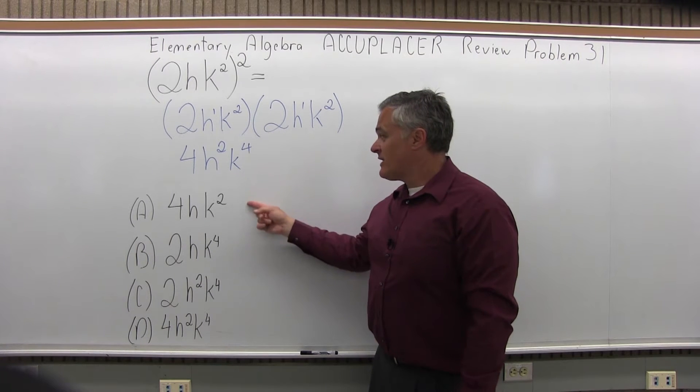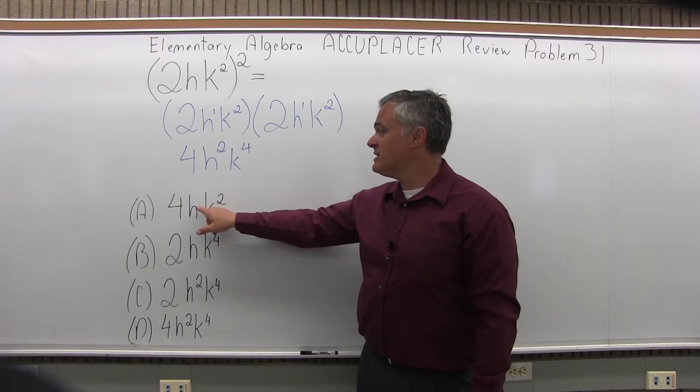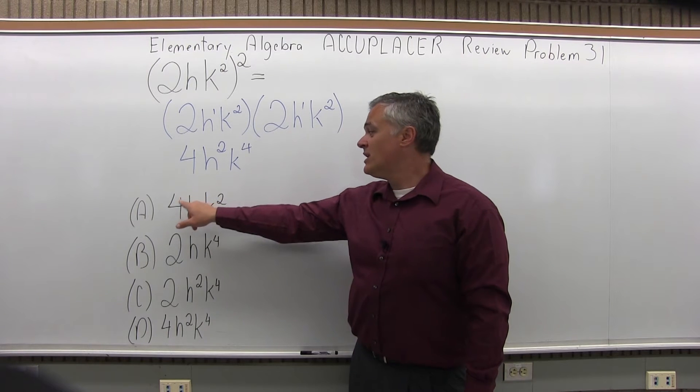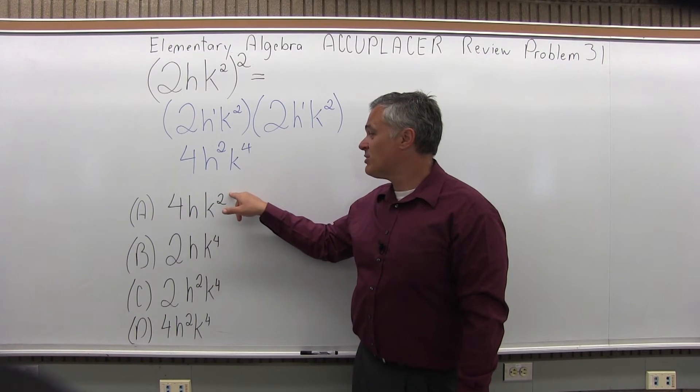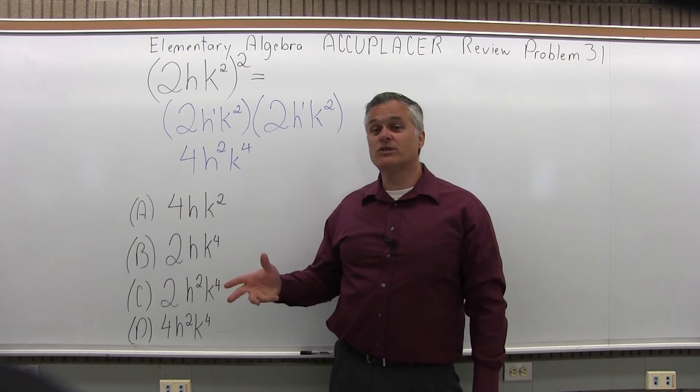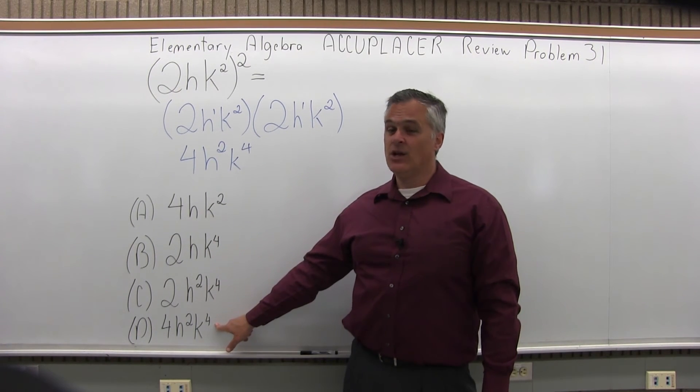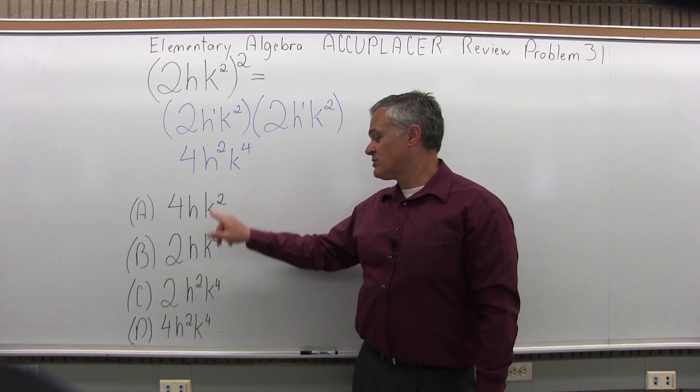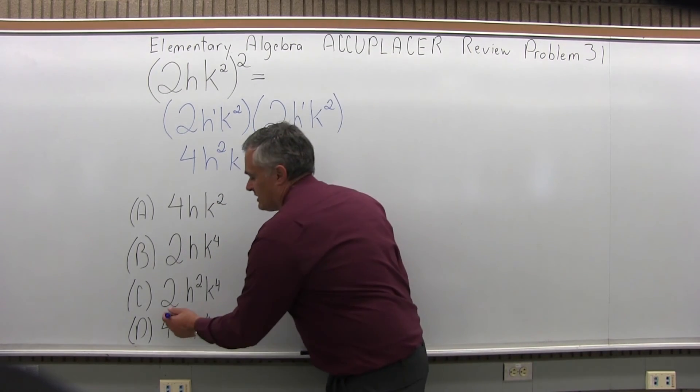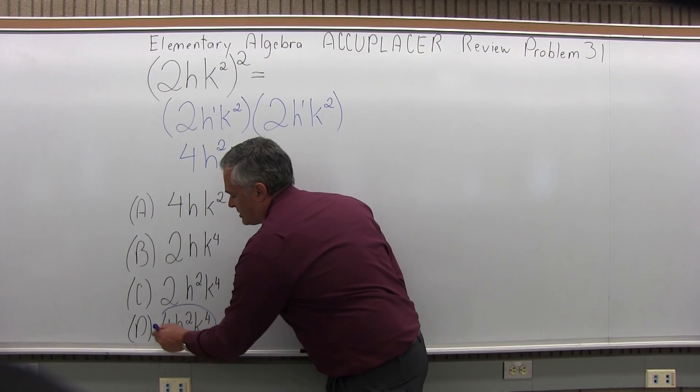Now as I check that against the available list of answers, some of them look very similar. You want to check the number, the variables, and the exponents on the variables. Option A looks close, but it's not a match. As you look down to Option D, Option D is a perfect match with the answer we have. So the answer for 31 is Option D.